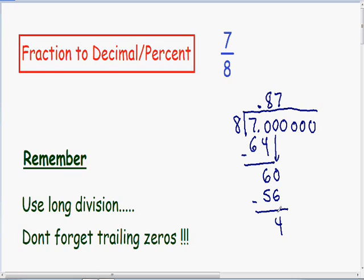We still have a remainder, so we need to keep going. I'll bring down my next zero. 8 goes into 40, 5 times, and 5 times 8 is 40. If we subtract 40 and 40, we get a remainder of zero. Once you get a remainder of zero, you can stop dividing.